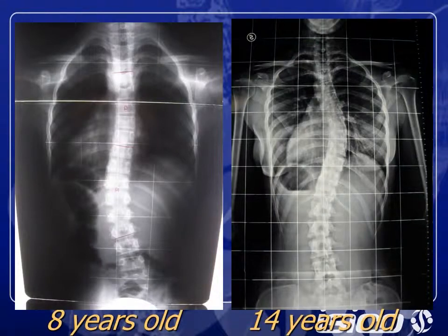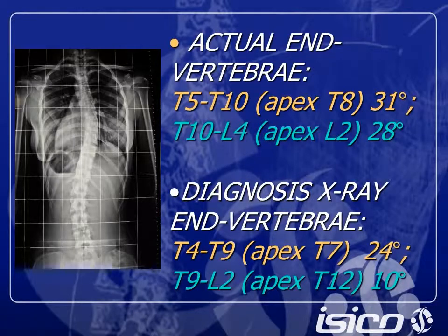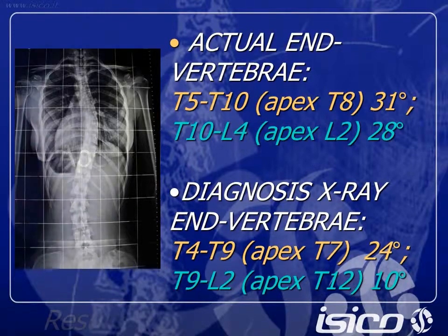Here you can see, on the left, the girl was 8 years old at the beginning of the treatment, and at the end she was 14 years old. If we measure the end-of-treatment X-ray in these two ways, we find at the actual end vertebra a right thoracic curve of 31 degrees and a left lumbar curve of 28 degrees. But with the same end vertebra of the diagnosis X-ray, we find a right thoracic curve of 24 degrees and a left thoracolumbar curve of 10 degrees.